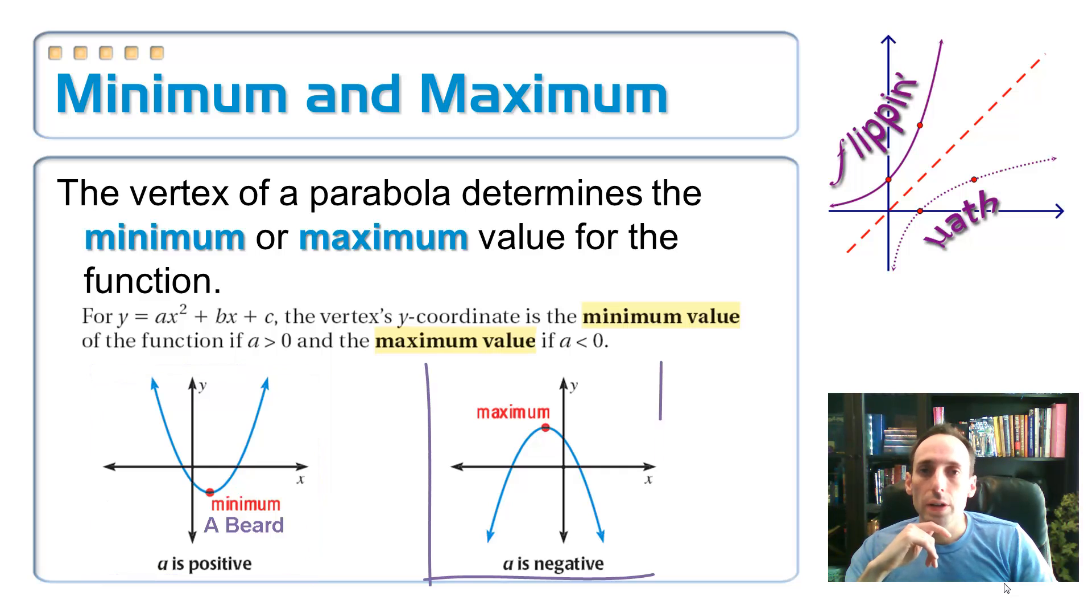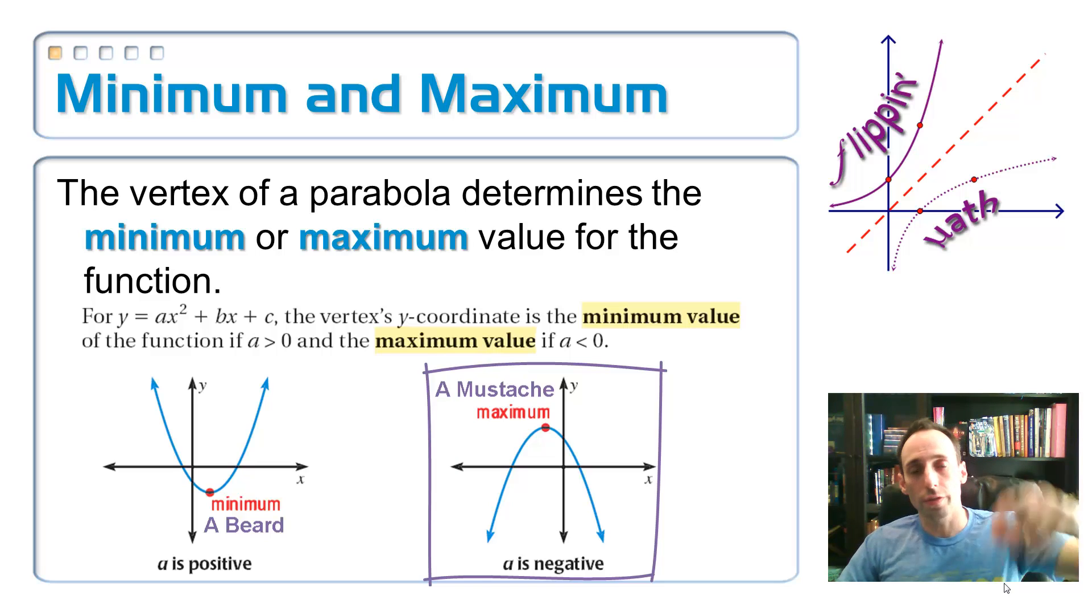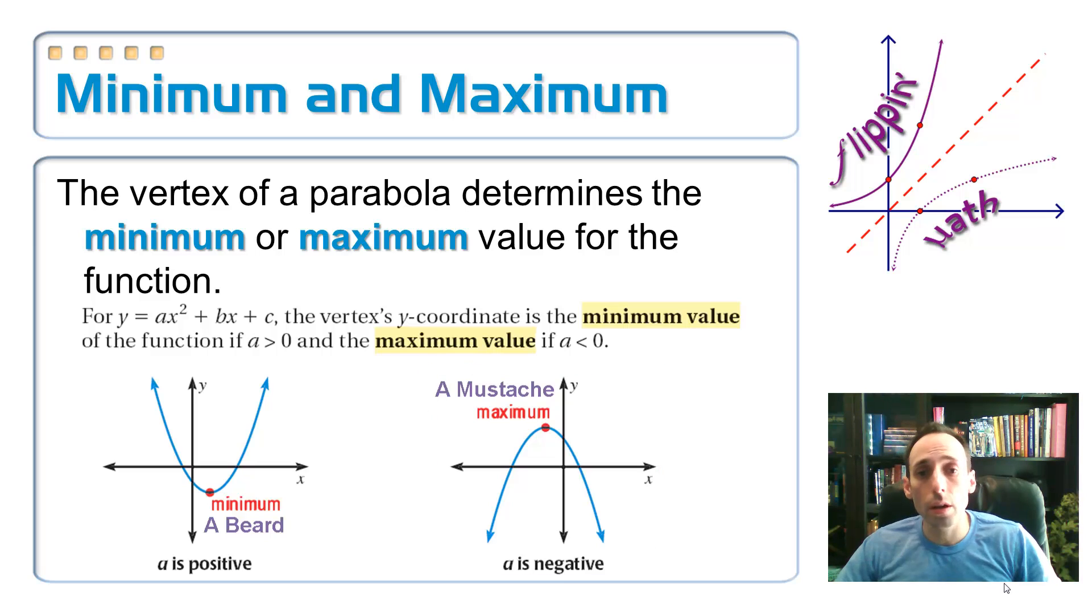If your a value is negative, you have yourself a Fu Manchu mustache, and it's going to open downwards. So your vertex is at the top, and that's a maximum point. Again, what we're looking for is just the y-coordinate. This is not really the same question as asking what is the vertex, because I just want the y-coordinate of it.